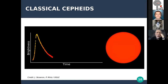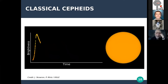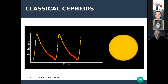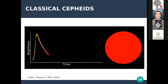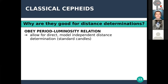The pulsation period ranges from about one to 100 days for classical cepheids — this particular example was probably a roughly ten-day period cepheid. The main property used for distance determinations is the period-luminosity relation obeyed by classical cepheids. It allows for direct distance determination independent of any assumptions. This is why we call classical cepheids standard candles for determining distances in the universe — not only in our galaxy, but also in other galaxies.